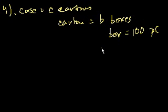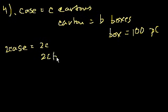And then they say a box is equal to 100 paper clips. How many paper clips are contained in two cases? So we could say two cases is equal to 2C cartons. 2C cartons are equal to, so each carton has how many boxes? Has B boxes. So this is going to be equal to 2 times C. That's how many cartons. And each carton has B boxes, so it's going to be equal to 2CB boxes.